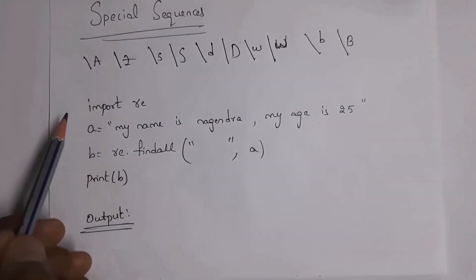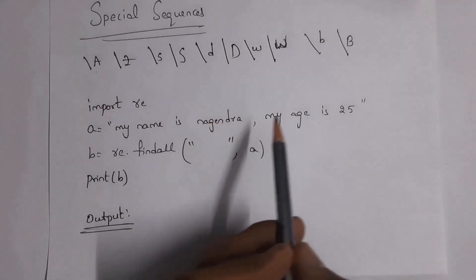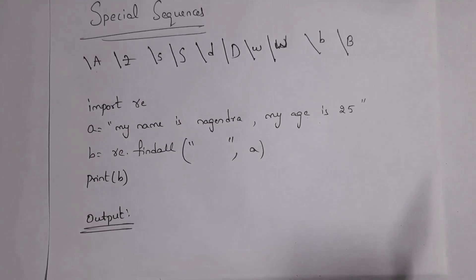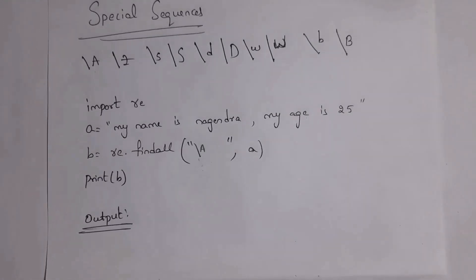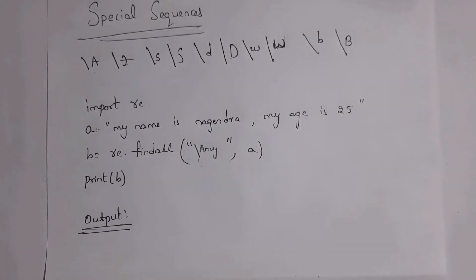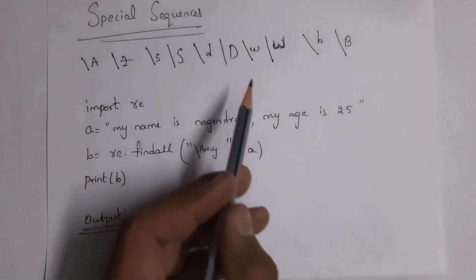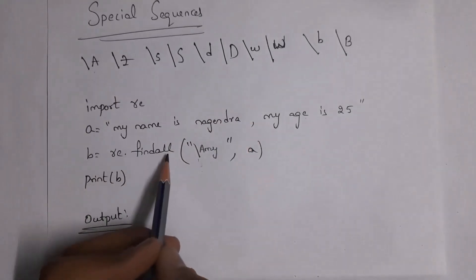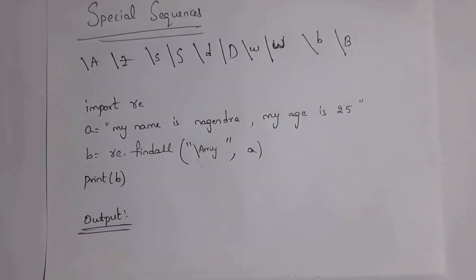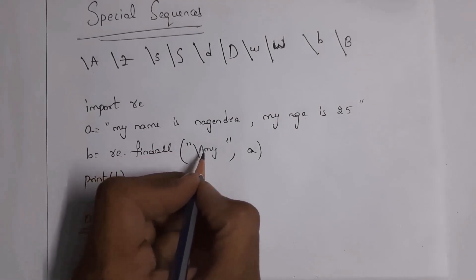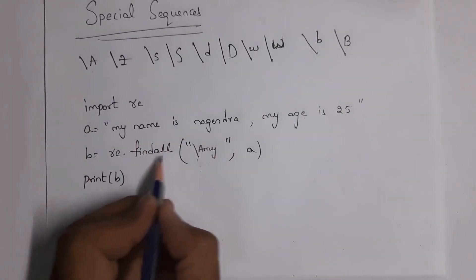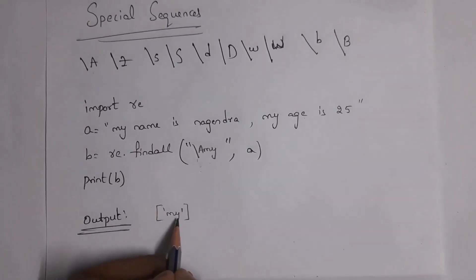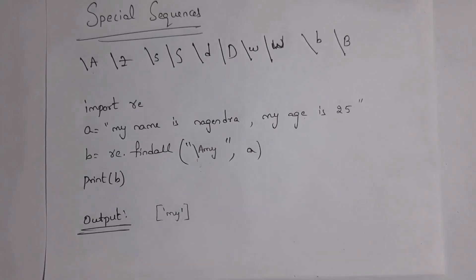First I'll explain the use of `\A`. In the program, first import `re`. Then I set `a = 'my name is nagendra, my age is 25'`. Next, `b = re.findall('\Amy', a)`. For each special sequence you can use the `findall` function. `\A` is used to check whether a given character is available at the start or not. Since 'my' is at the start, the output is `['my']`.